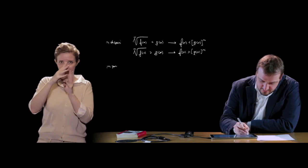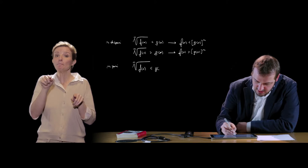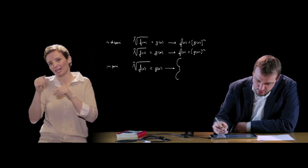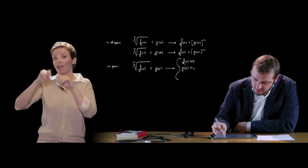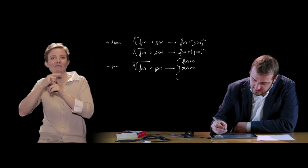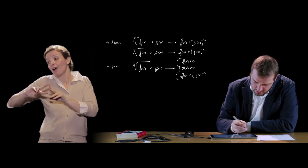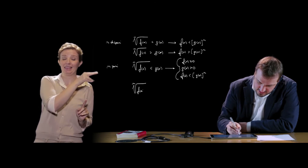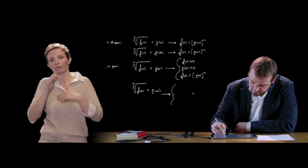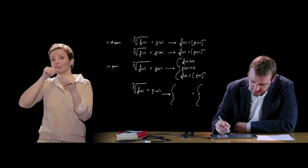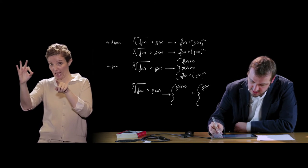Con n pari il concetto è più complicato, perché dobbiamo distinguere. Se abbiamo radice ennesima di f(x) minore di g(x), bisognerà andare a risolvere il sistema costituito da: f(x) maggiore o uguale di 0, che è la condizione di esistenza del radicale; g(x) necessariamente maggiore di 0, per poter essere superiore al radicale; e poi dobbiamo studiare f(x) minore di g(x) alla n. Se invece la radice ennesima di f(x) è maggiore di g(x), la disequazione si studia studiando due sistemi le cui soluzioni poi dovranno essere unite, distinguendo il caso in cui g(x) è maggiore o uguale di 0 da quello in cui g(x) è minore di 0.